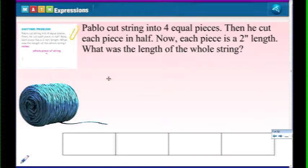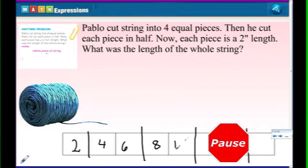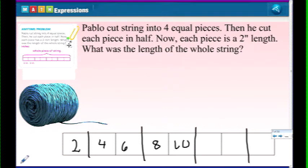Let's get started with a piece of string. Pablo cut string into four equal pieces. Then he cut each piece in half. Now each piece is a two inch length. What was the length of the whole string? I'm using this table to show four equal pieces. He cut each of those in half. One, two, three, four. Now each piece is a two inch length. What was the length of the whole string? So we can actually go two, four, six, eight, ten. What's the answer? There's the answer. 16 inches. So 16 inches was the total length of the whole string.